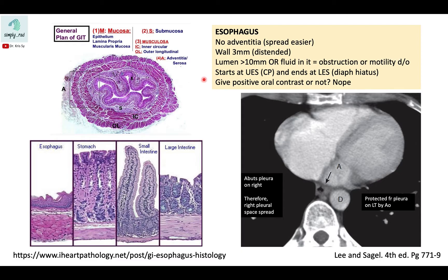The esophagus has no adventitia. Looking at the general plan of the GIT, for the rest of the GIT we have an adventitia or serosa as the outermost layer. Since the esophagus lacks that layer, the spread of tumor will be easier.